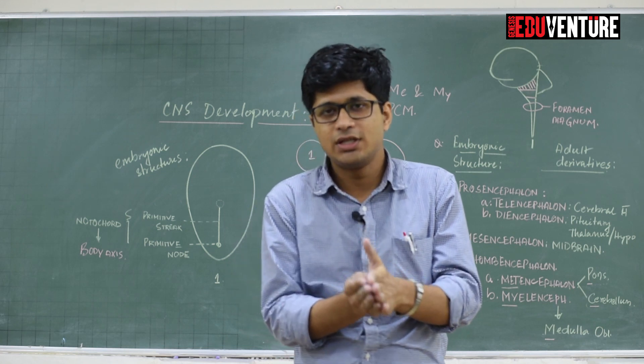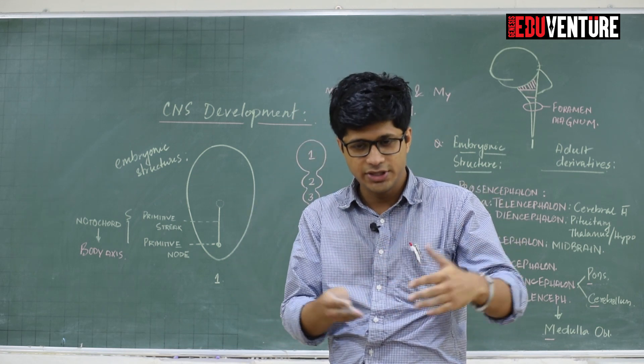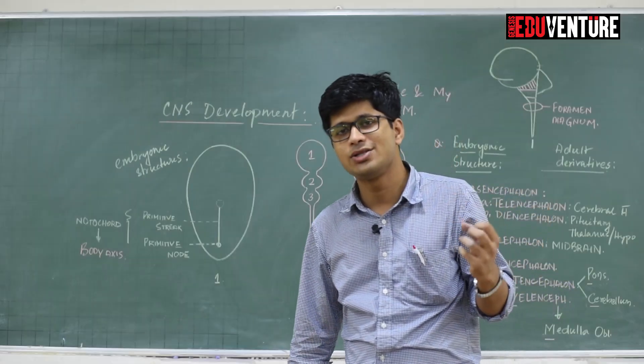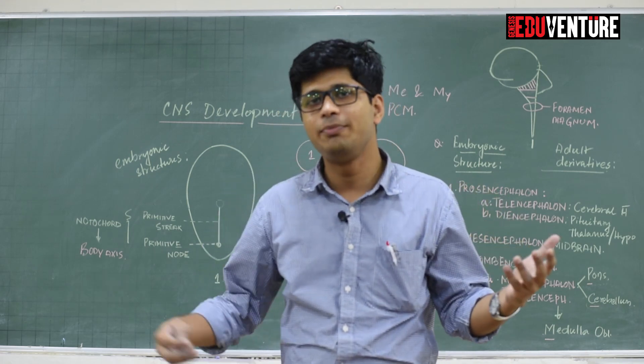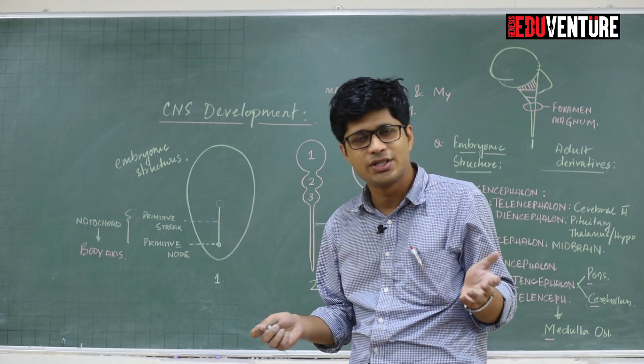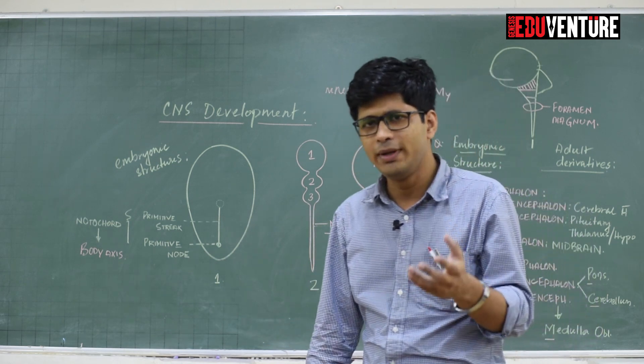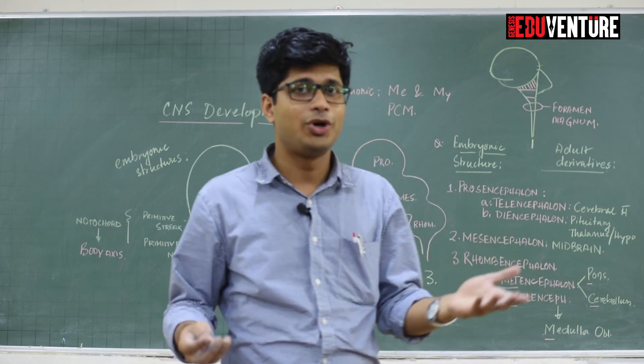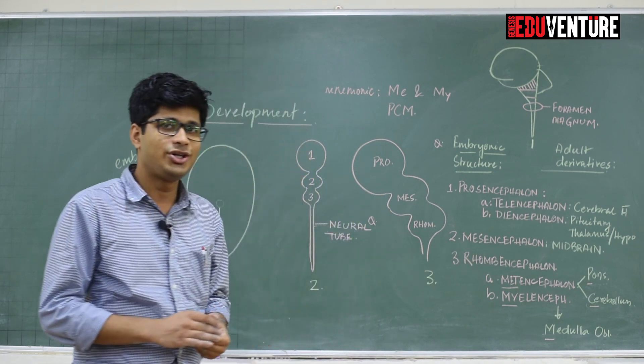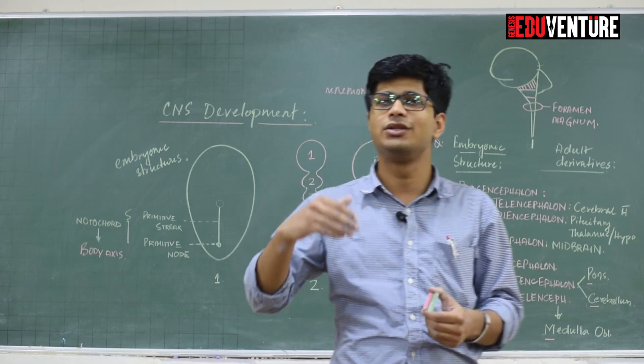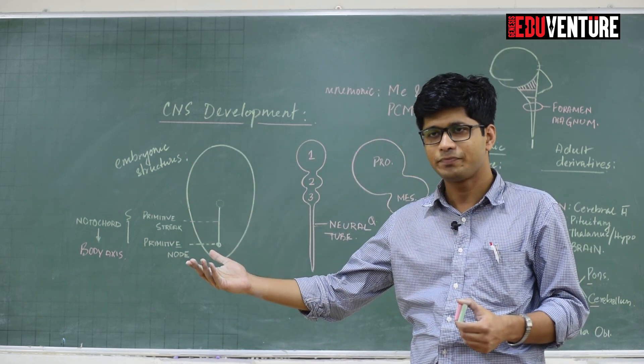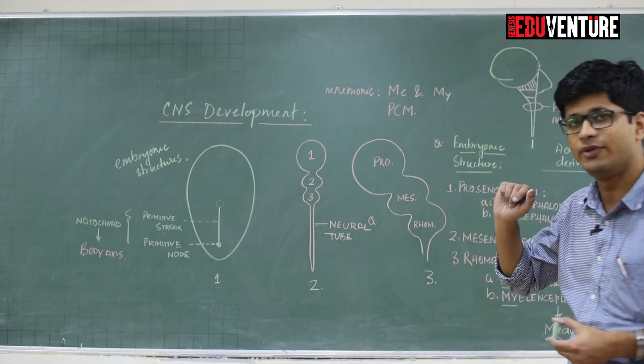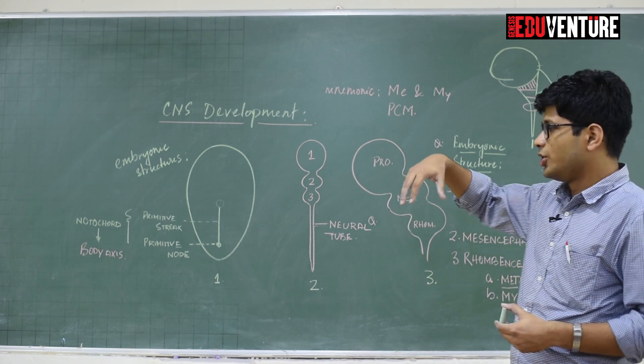The nervous system is divided into two parts, one is the central nervous system, one is the peripheral nervous system. Questions are asked on CNS development more often than on PNS development. There have been no questions on PNS development because that is complicated, which we study under embryology when you become a doctor. Right now we need to concentrate on CNS development.